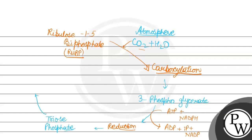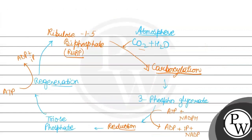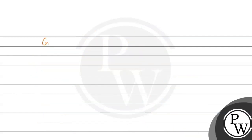फिर यह triose phosphate का regeneration होगा — RuBP में। और इस regeneration में एक molecule ATP utilize होगा, और ADP बन जाएगा। Triose phosphate का दूसरा नाम है G3P (glyceraldehyde-3-phosphate)।